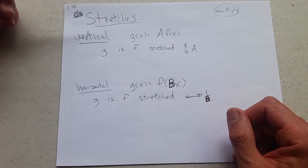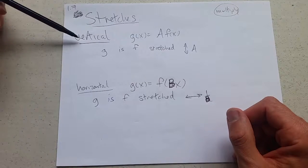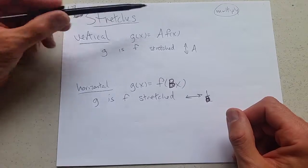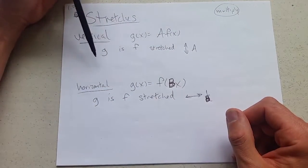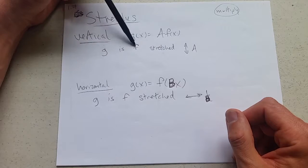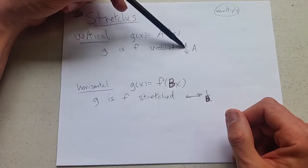Stretches are a little bit more tricky. Vertical stretch: if your function g is a number a times f of x, that means g is the graph of f stretched vertically by a.